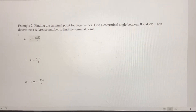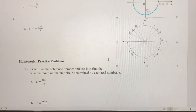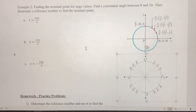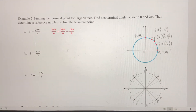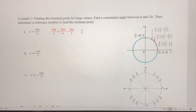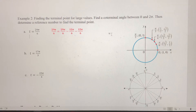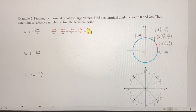29π/6 is almost 5π — 30π over 6 would be 5π, so we're just shy of 5π. We're going to need to subtract 2π from 29π/6. Subtracting once: 29π/6 minus 12π/6 gives 17π/6 — that's still too big, we're not between 0 and 2π yet. So subtracting another 2π: 29π/6 minus 24π/6 gives 5π/6. So 29π/6 and 5π/6 are coterminal.